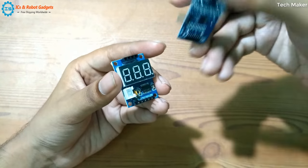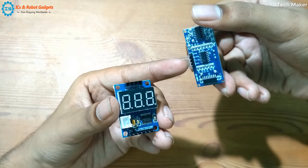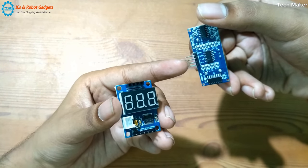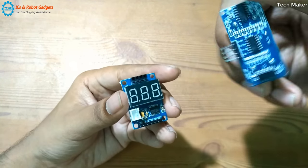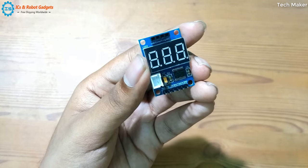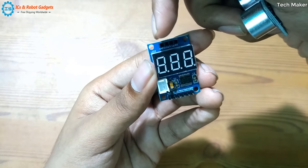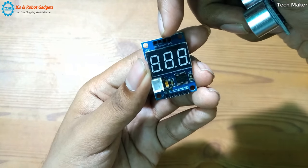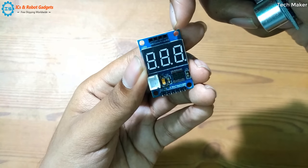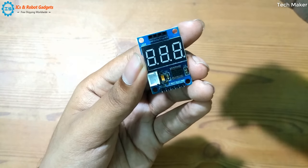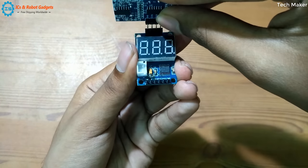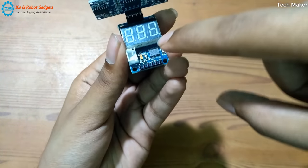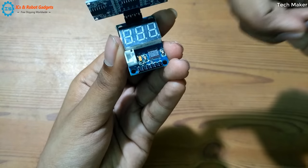Here you can see the pins: ground, echo, trigger, and VCC. Here you can see ground, echo, trigger, and VCC. So we will connect them in that manner so that the display will be on the backside of this module.